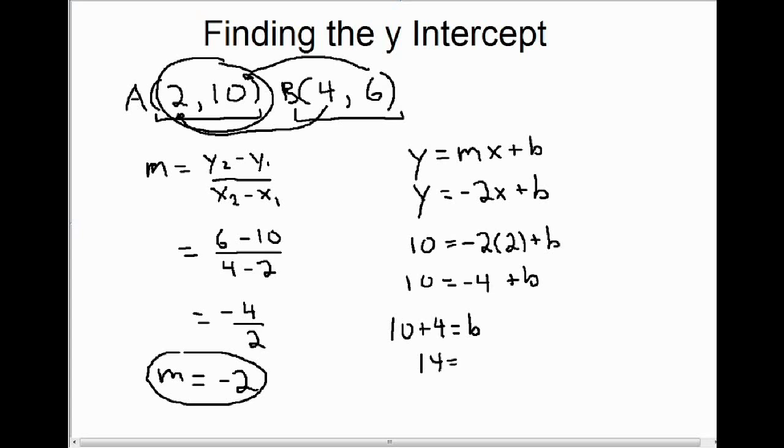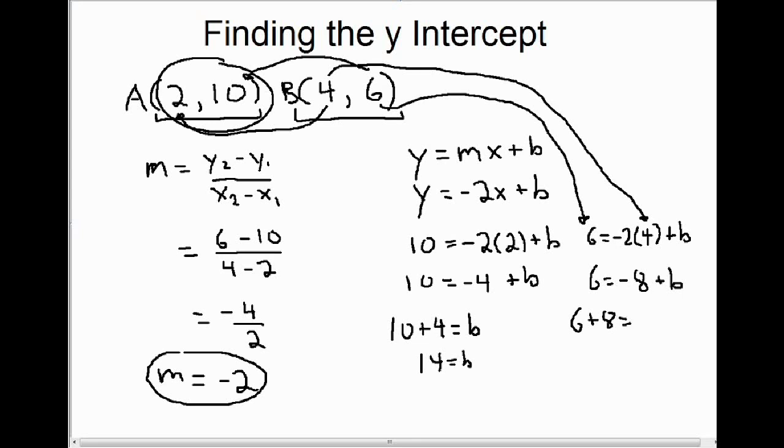Now, I chose to substitute the first coordinate. Suppose we had substituted the second coordinate. In that case, the equation would have looked like this. That's 6 equals negative 2 times 4 plus b. So in this case, I'm taking this y-value and this x-value. And then again, if I simplify, negative 2 times 4 is negative 8. Bring that negative 8 over to the other side. It becomes plus 8. And we do get the same answer. So you can see it doesn't matter which coordinate you plug in. You should get the same answer for b.